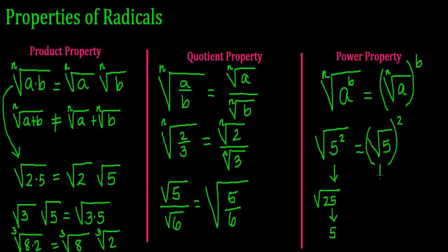They are equivalent. We can demonstrate: the square root of 5 squared becomes the square root of 25, which is 5. And this here becomes the square root of 5 times the square root of 5, which using the product property, I can join into one radical.